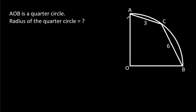In this video, we have been given that AOB is a quarter circle, AC is 3, and BC is 6. We have to find the radius of this circle.